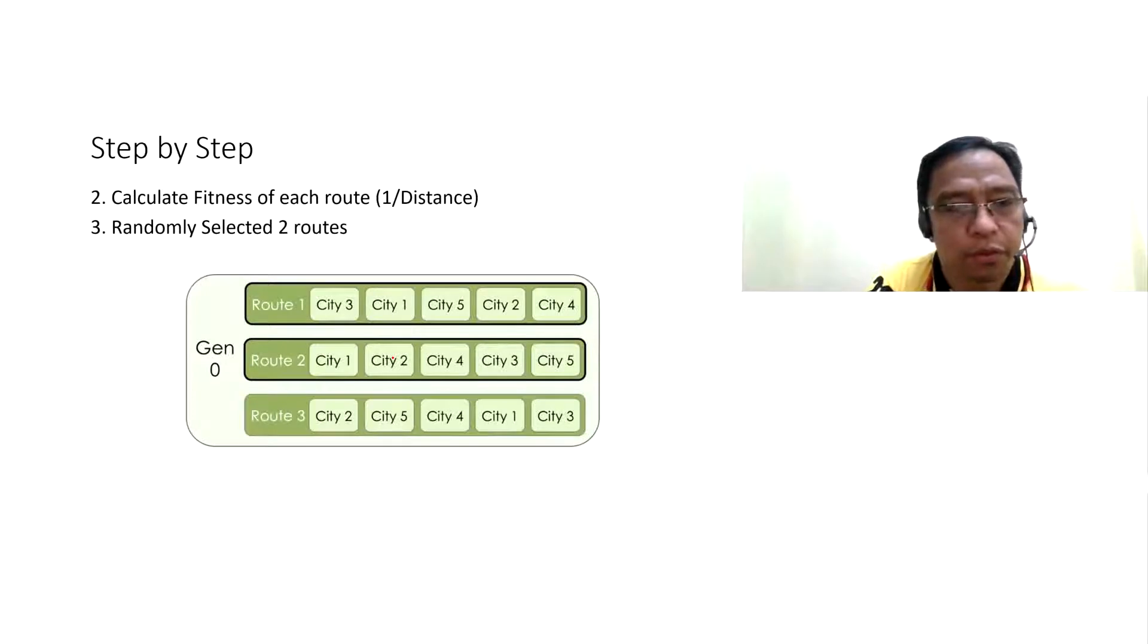Step two, calculate fitness of each route or one over distance. The shorter, the fitter. Third, randomly select two routes. The shorter the distance, the higher the fitter and then randomly select these routes.